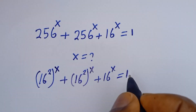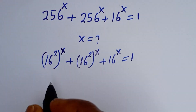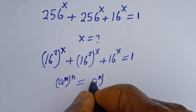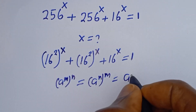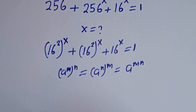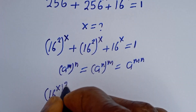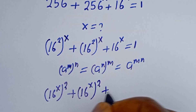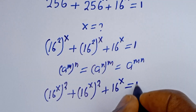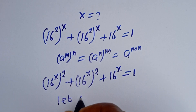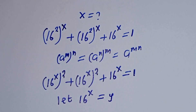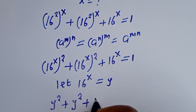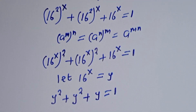Take note that if you have a to the power of m to the power of n, this is equal to a to the power of n to the power of m, which equals a to the power of mn. Then this can be written as 16 to the power of 2s plus 16 to the power of 2s plus 16 to the power of s is equal to 1.